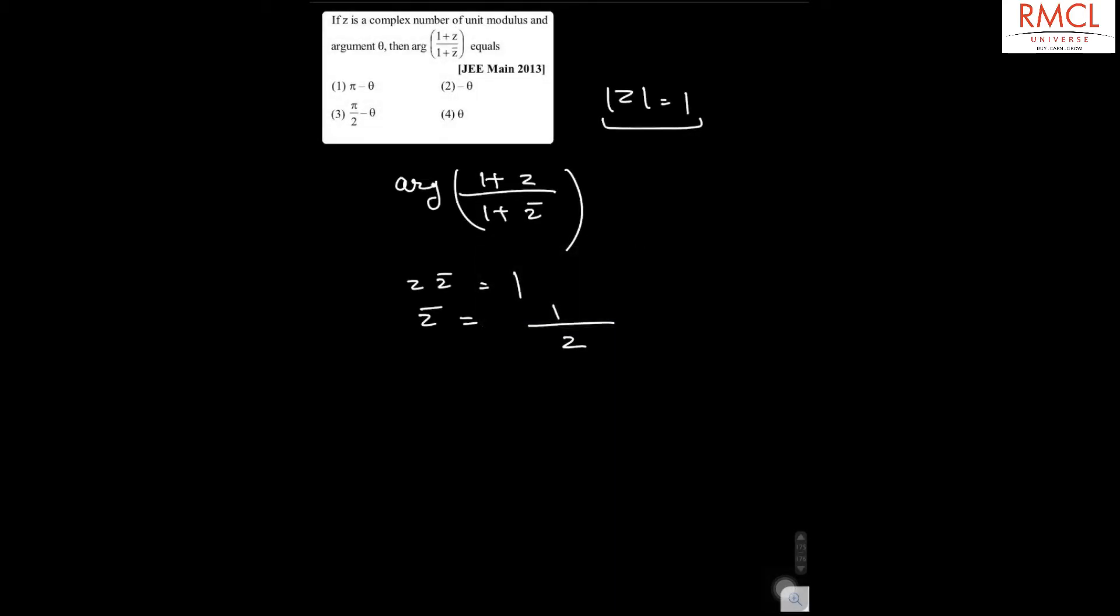If you put that in this argument, then you will have argument of (1 + Z) divided by (1 + 1/Z). This will be argument of Z(Z + 1) divided by (Z + 1).